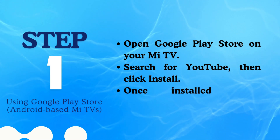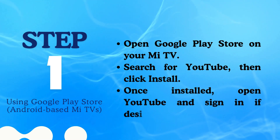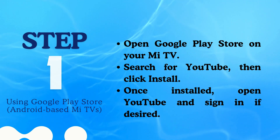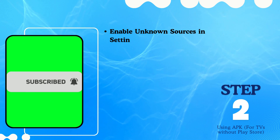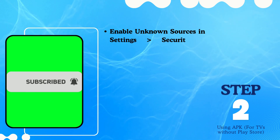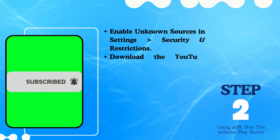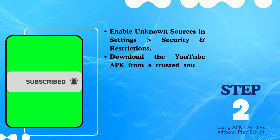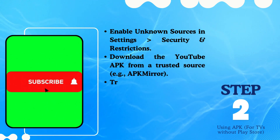Click install. Once installed, open YouTube and sign in if desired. Method two: using an APK for TVs without the Play Store. Enable unknown sources in Settings under Security and Restrictions, then download the YouTube APK from a trusted source.